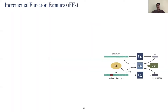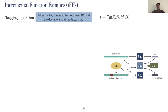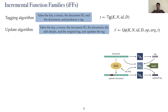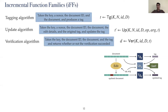We now describe the three algorithms that are part of the definition of any incremental function family. A tagging algorithm takes a key, a nonce, the identity, and the document, and produces a tag for the document. The update algorithm takes the key, a nonce, the identity, the document, the edit details, and the original tag, and produces an updated tag for the updated document. The verification algorithm takes the key, the identity, the document, and the tag, and returns a boolean as to whether or not the verification succeeded.